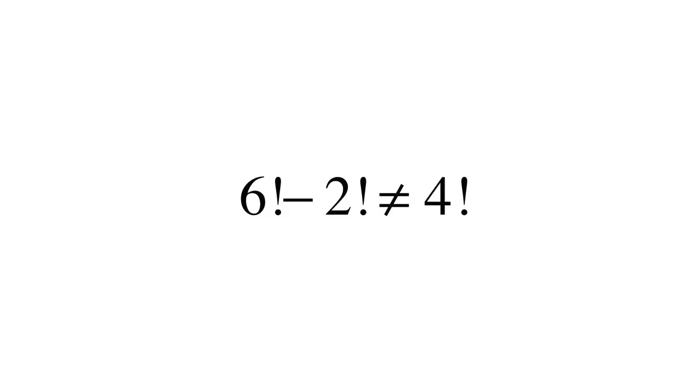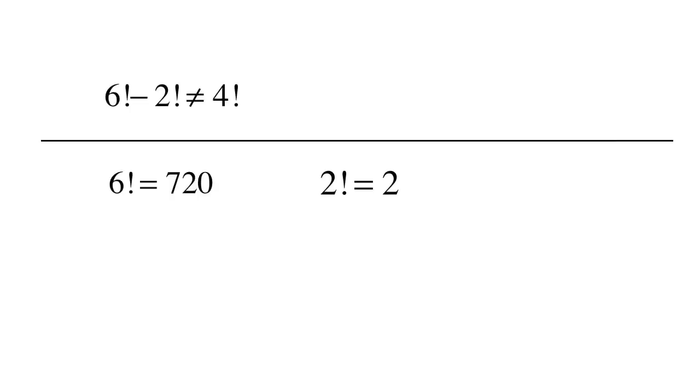Here again, we need to evaluate the factorials first. 6 factorial is equal to 720. 2 factorial is equal to 2. Therefore, 6 factorial minus 2 factorial is equal to 720 minus 2, which is equal to 718.